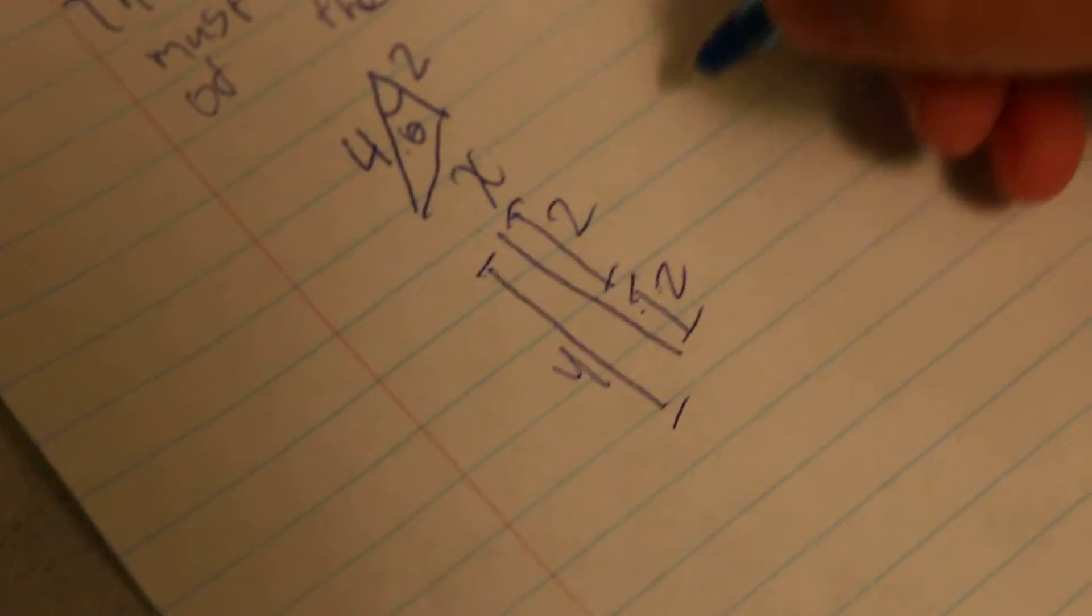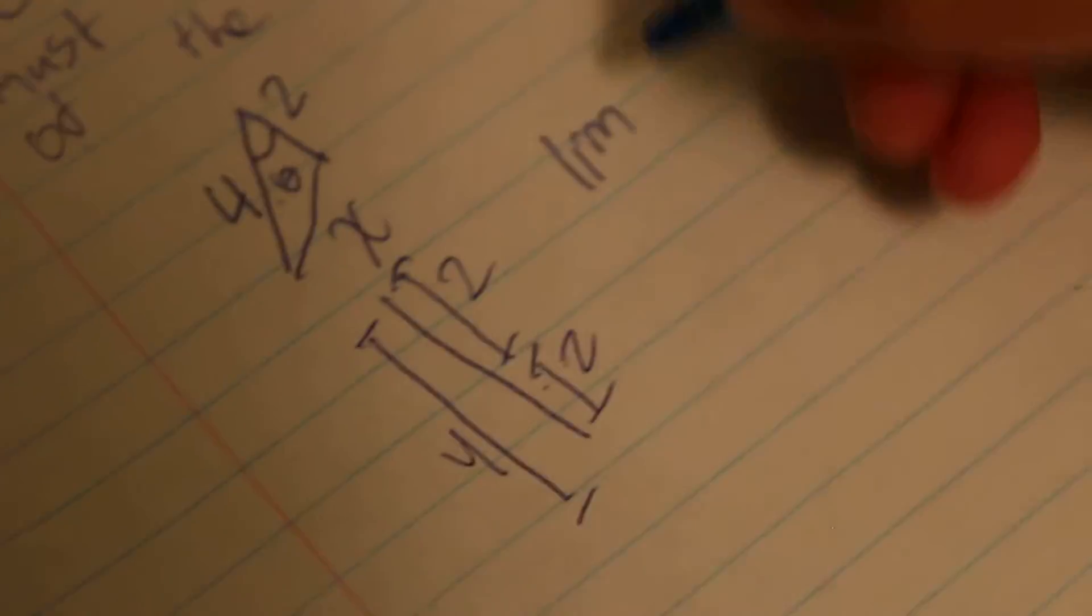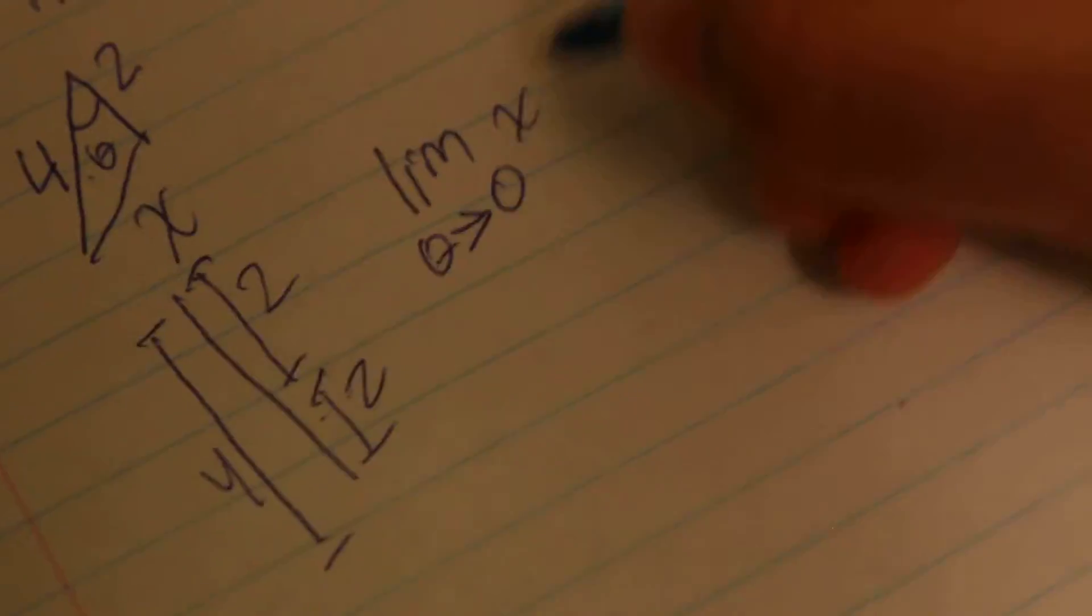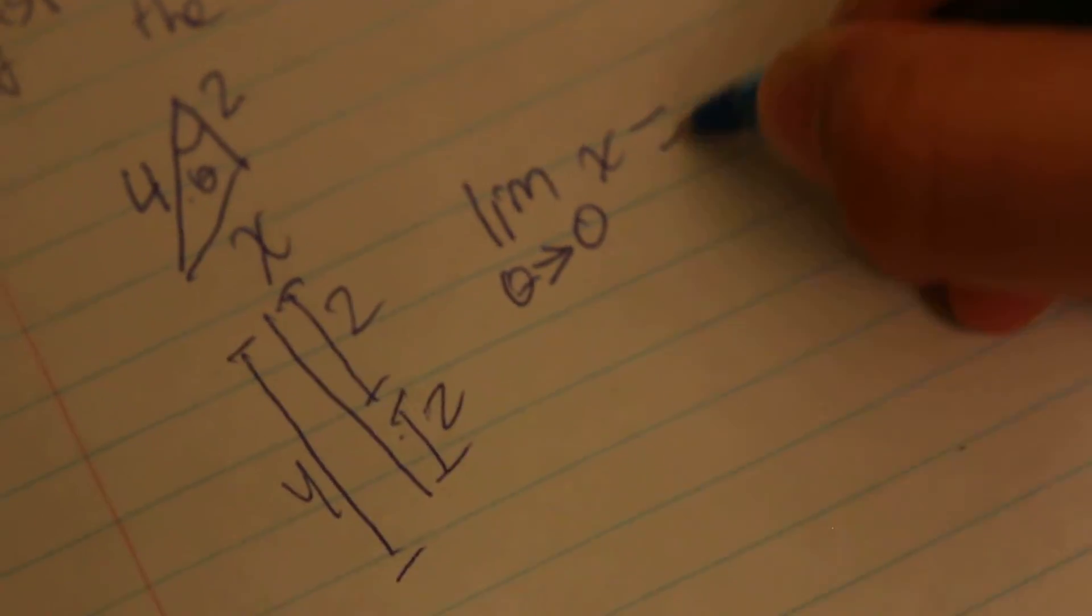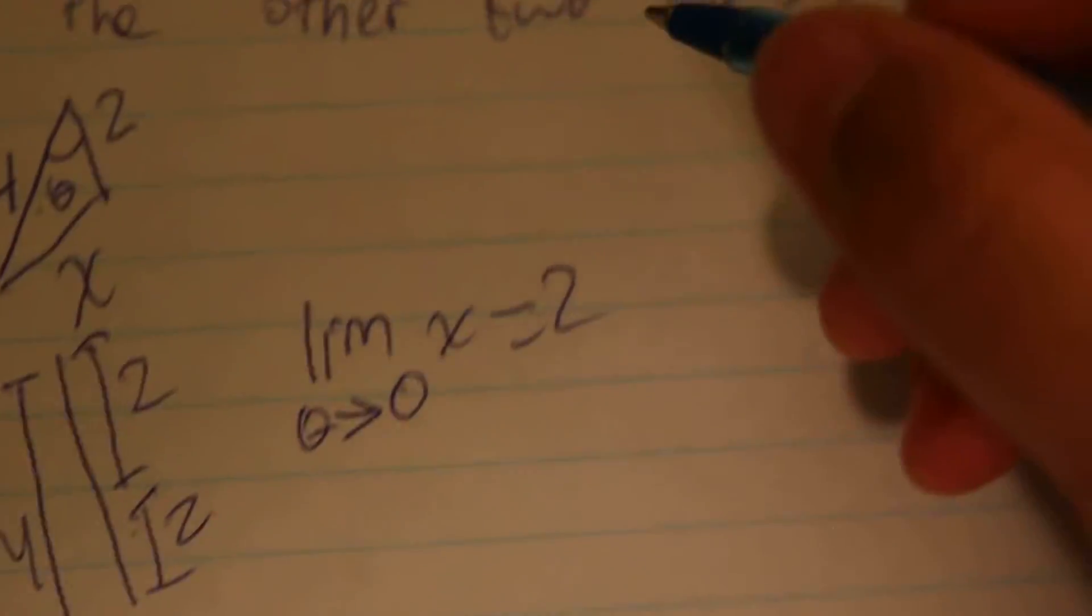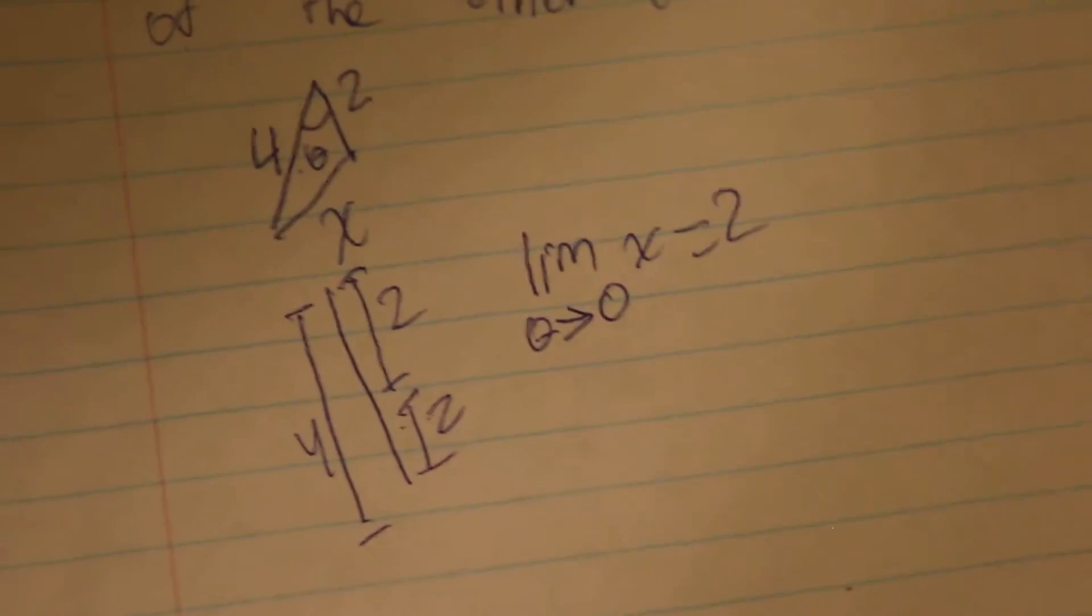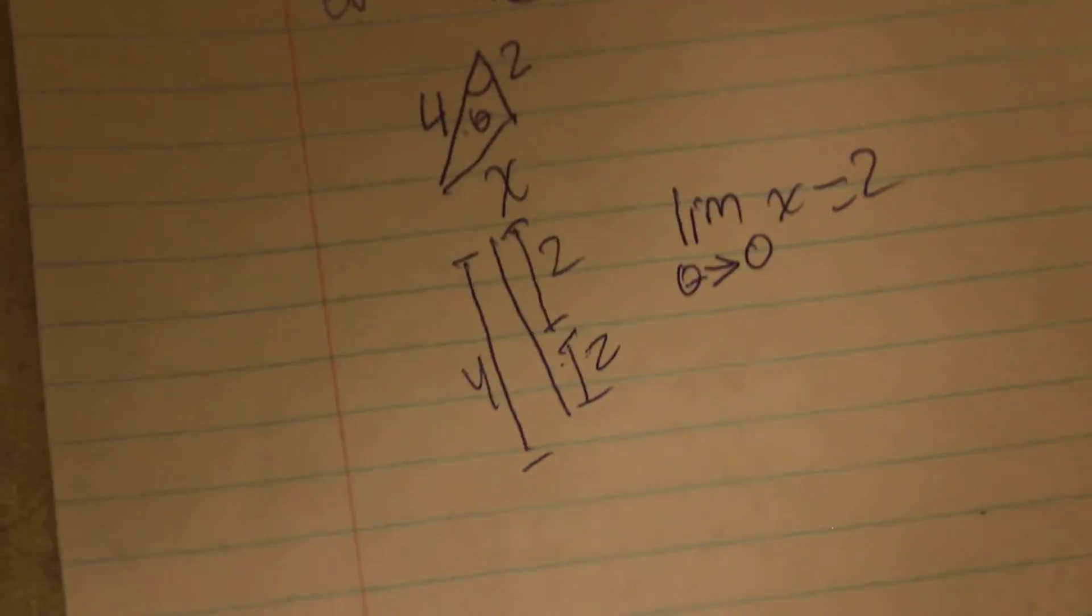So the limit as theta approaches zero of x is 2. And now, this means that this is true because we don't want a degenerate triangle, and if the sum isn't less than the other two sides, like in this case it is equal, then it will be a degenerate triangle.